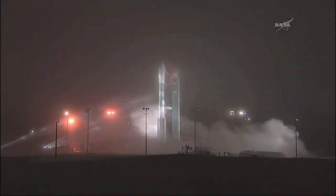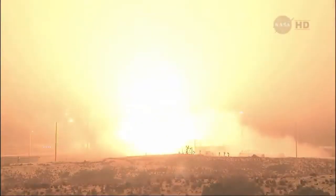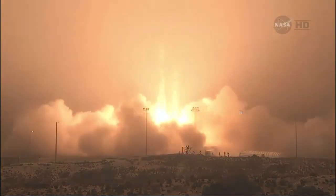Green board. T-minus ten, nine, eight, seven, six, five, four, three, two, engine start, one, zero. Liftoff of the Delta II rocket with OCO-2.